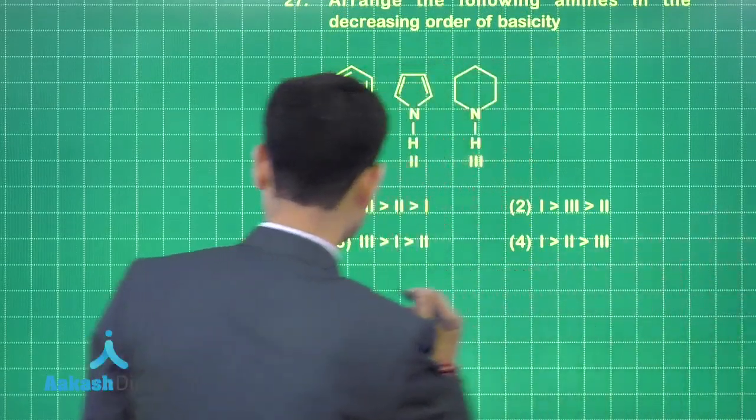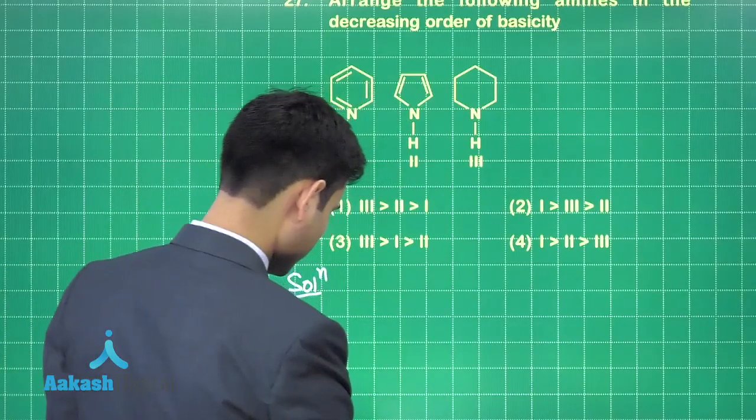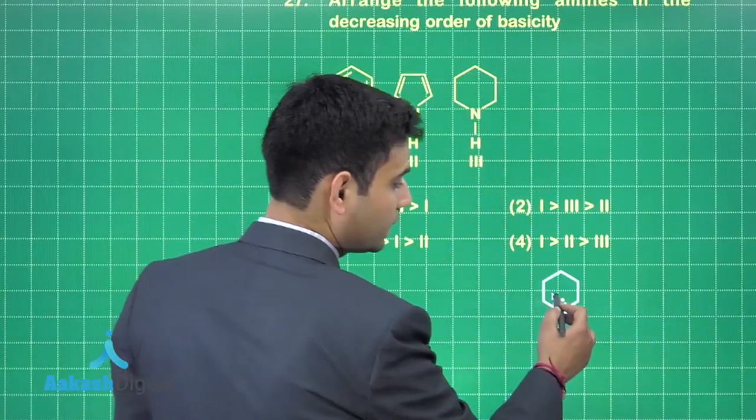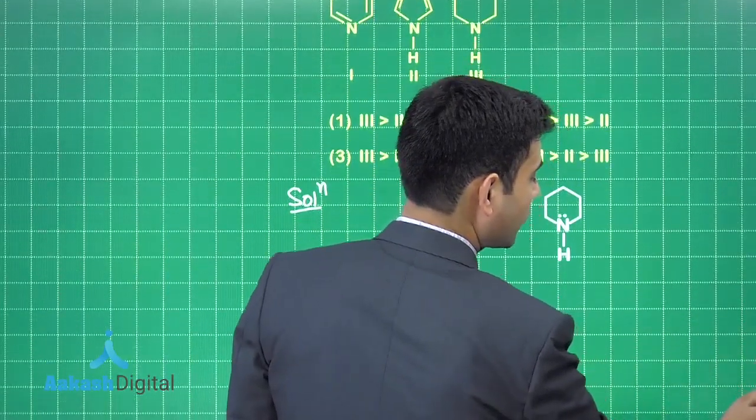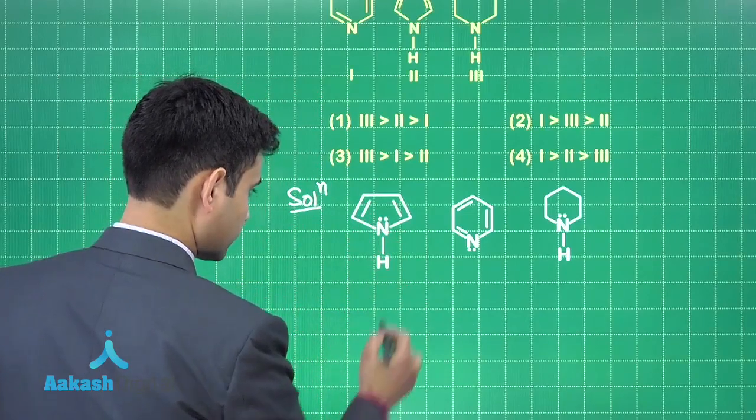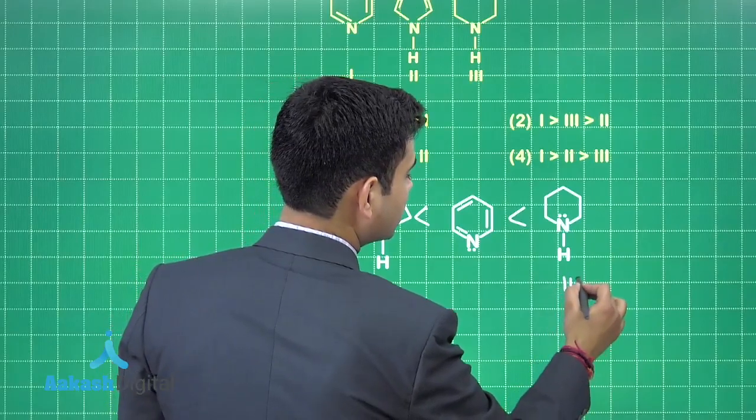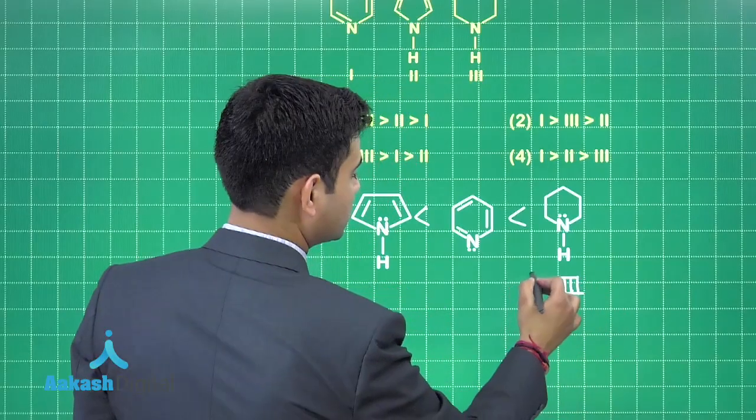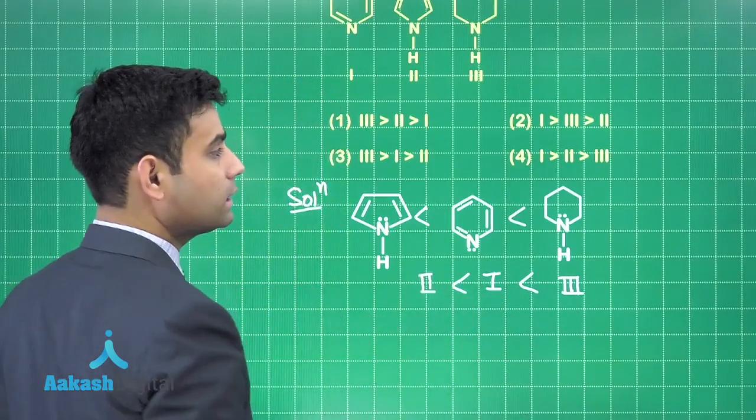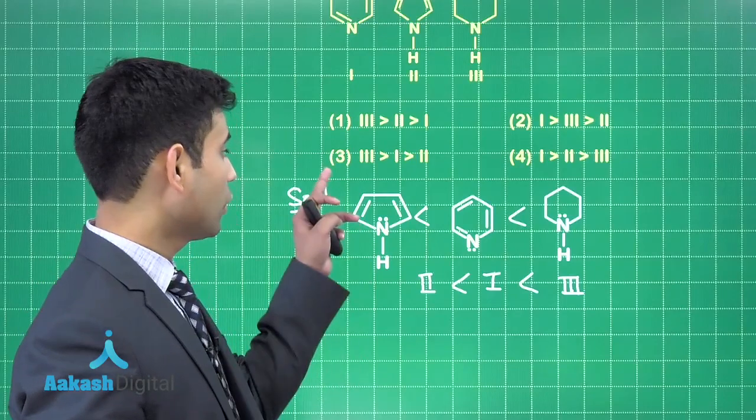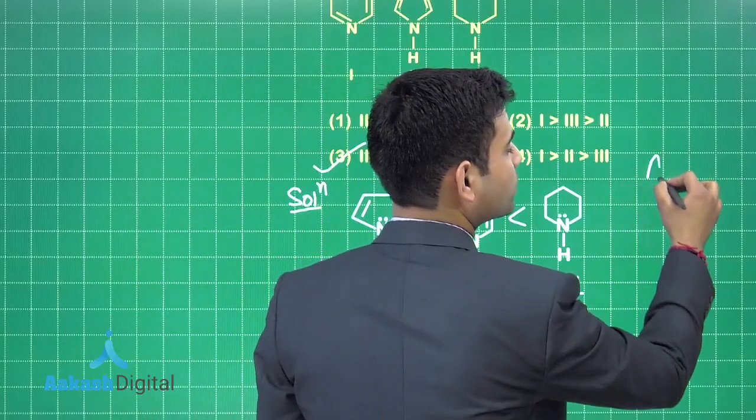So, the basic strength order will be the maximum for piperidine then we have pyridine and the minimum is for pyrrole. So, this is third. This is first and this is second. So, this should be the order. Let us go through the options. We can see that option 3 is the right answer and the correct answer for this question will be option 3.